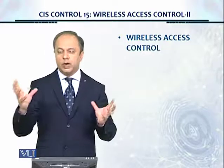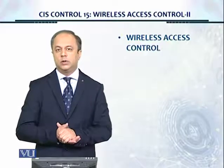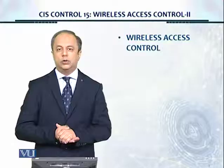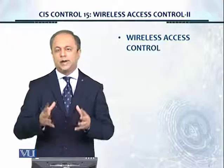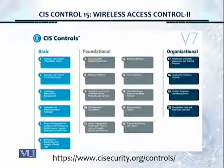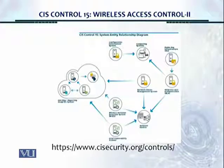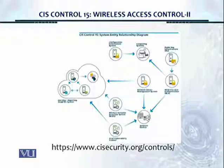These are invisible wireless signals which are traveling, and in the previous module we took a look at documenting and detecting authorized wireless access points. This is the CIS Control series for version 7, and there are 20 critical controls — we're on control number 15, wireless access control. This is the system entity relationship diagram. We're using a number of mechanisms: network level authentication, public key infrastructure, wireless intrusion detection systems, network device management systems, and vulnerability scanners to ensure we're monitoring, scanning, and implementing controls to limit wireless access control.